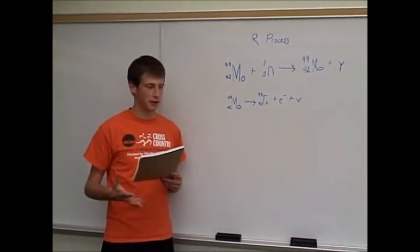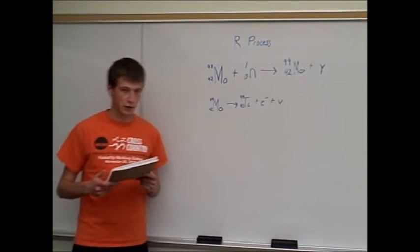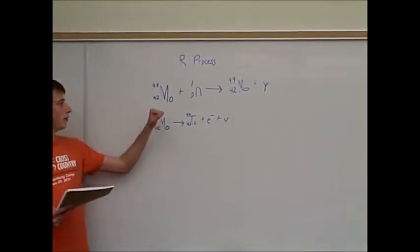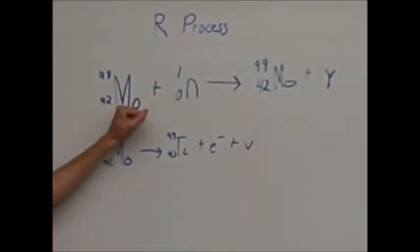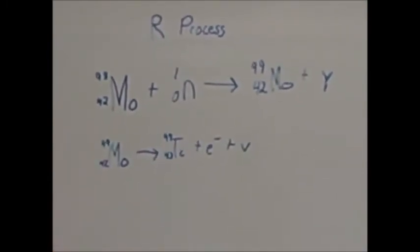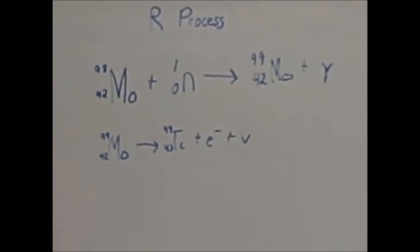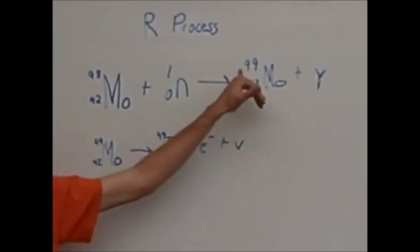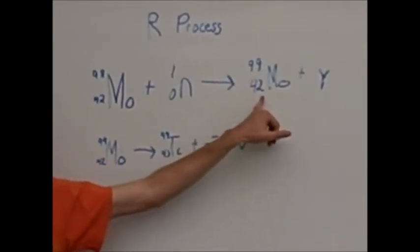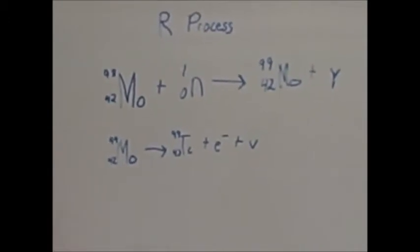After some of the heavier elements have been created, a process called the R process can take place. The R process involves an element, like molybdenum here, and a neutron. When the elements are heavy enough, they kind of start in this stellar explosion. They collect a neutron, and their mass number increases by one, but their atomic number stays the same, keeping the same element. This can go on for an extremely long period of time and just create heavier and heavier isotopes.